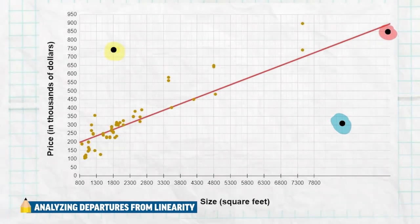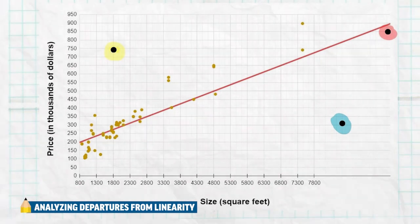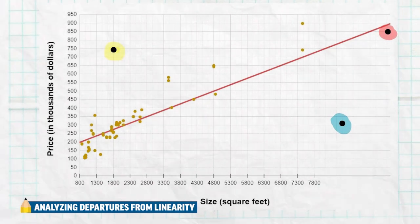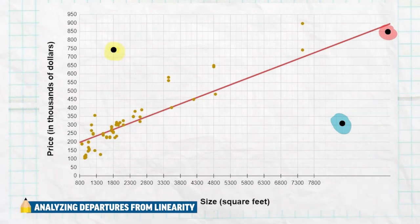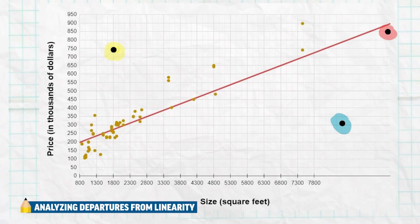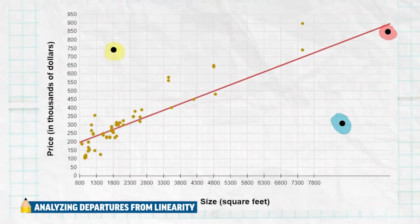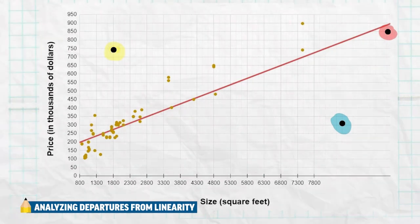Then we see the red point. I want to make a really important comment here: this red point is actually not an outlier, because it is an outlier in both the X and the Y direction. When you're looking at a scatter plot, outliers are typically outliers in one direction only. Because the red point is an outlier in both X and Y, it actually fits the pattern — it doesn't come off the pattern. It is a very large house that has a very expensive price tag, which fits exactly what the data should be doing.